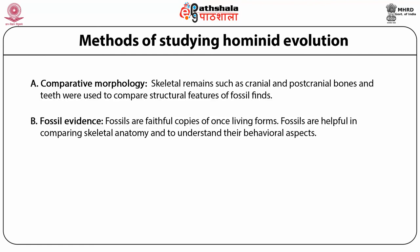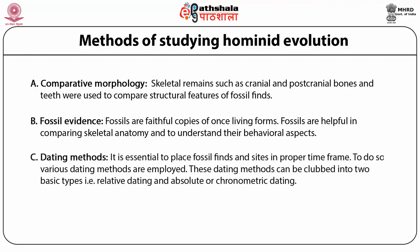Let's discuss the dating method. It is essential to place fossil finds and sites in their proper time frame. Various dating methods are employed. These can be grouped into two basic types: relative dating and absolute or chronometric dating. Relative dating tells us that something is older or younger than something else, but exact differences in antiquity are not established. For example, a fossil found at a deeper layer or strata is older than one found at an upper layer. This is based on relative sequence.